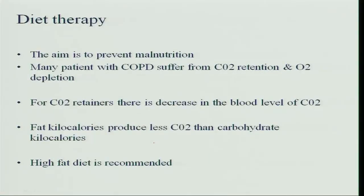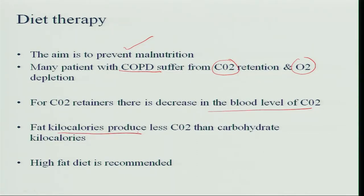For diet therapy in lung diseases, the primary aim is to prevent malnutrition. Many patients with chronic obstructive pulmonary disease suffer from carbon dioxide retention and oxygen depletion. When more carbon dioxide is retained in the blood, the blood becomes acidic. Since fat kilocalories produce less carbon dioxide than carbohydrate calories, a high-fat diet is recommended — but this means easily digested fats, not fried foods.